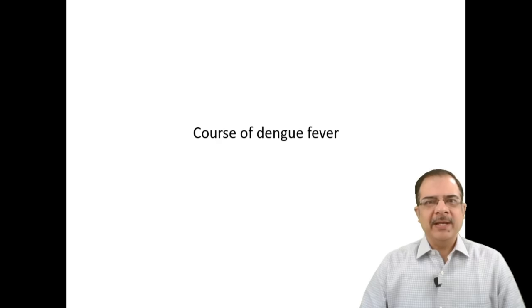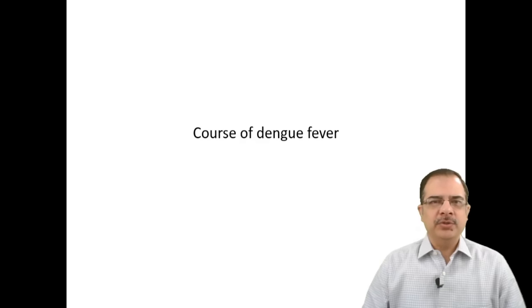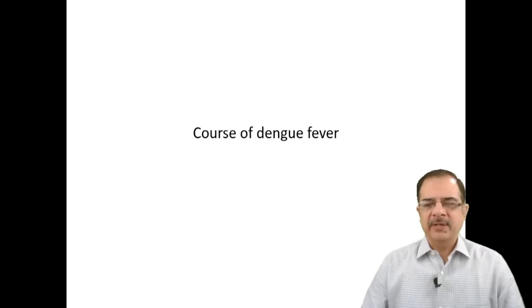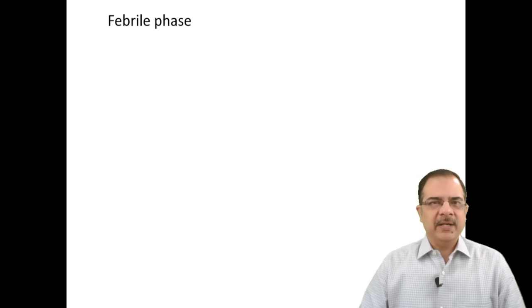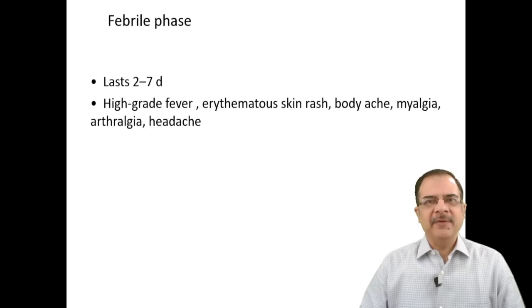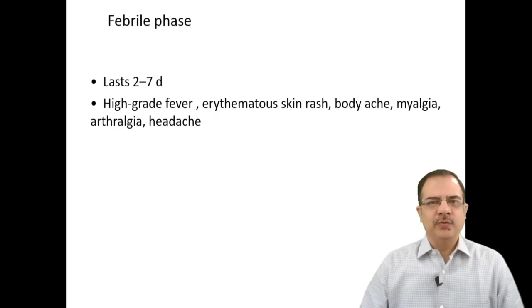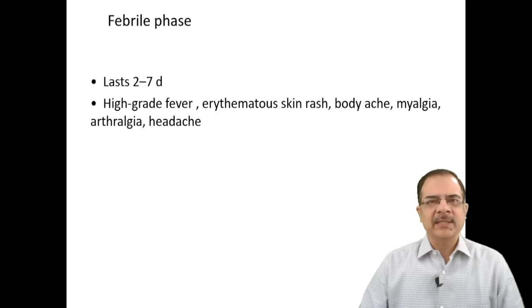The course of dengue fever has three phases. The first is the febrile phase, which lasts for two to seven days — usually three to four days in most individuals.